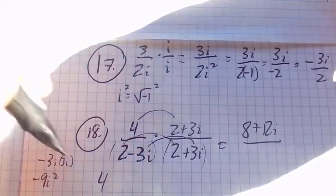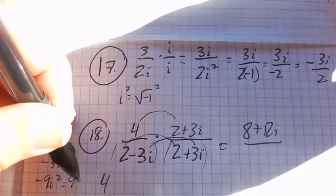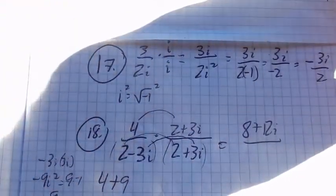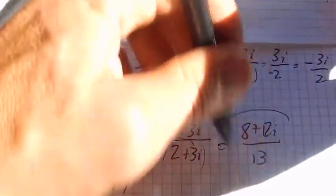But i squared is negative 1. So negative 9 times negative 1 is positive 9. So I'm going to have 4 plus 9, which is 13, in the denominator.